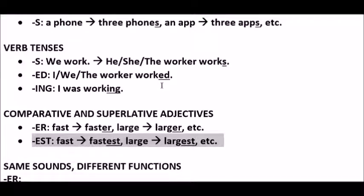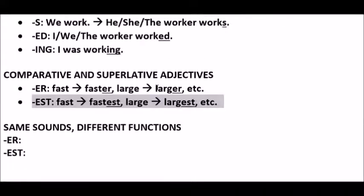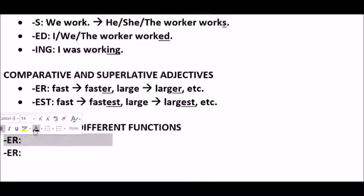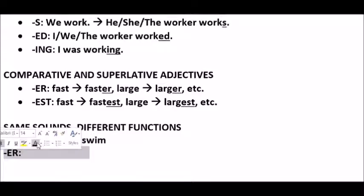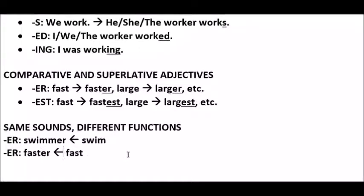Now, watch out. We can identify parts of speech by the parts of the words, such as in these derivational and inflectional suffixes, but that's not always enough. Sometimes they can have the same sounds with different functions. For example, -er can derive a noun from a verb — swim to swimmer — but as we just saw, -er is also for the comparative. So, in addition to these parts of words, we need to look more at the way the words are used in clauses and phrases, which we'll do in the next video.